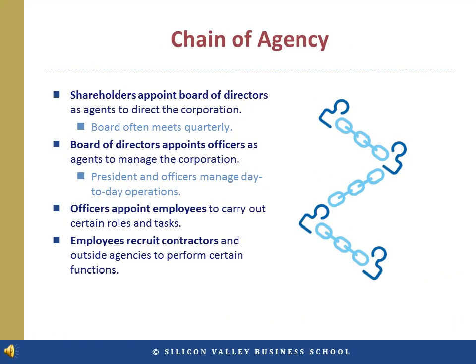In a corporation, there exists a chain of agency relationships. The shareholders appoint the board of directors as agents to direct the corporation. As the board usually meets only on a quarterly basis, the board of directors appoints officers as agents to manage the day-to-day operations of the corporation. The officers appoint employees as agents of the company to carry out certain roles and tasks. Employees recruit contractors and outside agencies to perform certain functions.